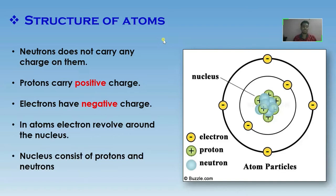Neutron does not carry any charge, while proton carries positive charge and electron has negative charge. In atoms, electrons revolve around the nucleus. A nucleus consists of protons and neutrons.